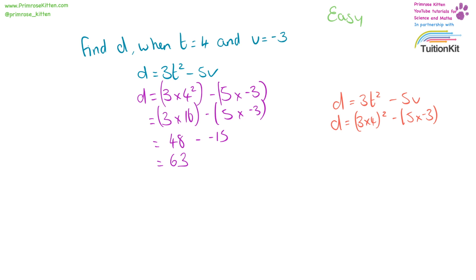If you got confused and did four times three first, you would have come up with 12 squared minus minus 15. 12 squared is 144 plus 15, which would have given you 159. This is the wrong answer. The correct answer is 63. You need to pay attention to whether you do your multiplication or your powers first.